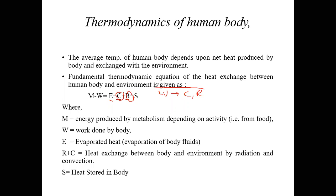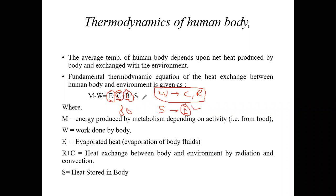In winter conditions, heat transfer to the surroundings occurs by convection and radiation. In summer air conditioning, since the surrounding temperature is more than the body temperature, there will be no heat transfer by convection or radiation. The heat must be transferred by evaporation - that is, by the sweating process.